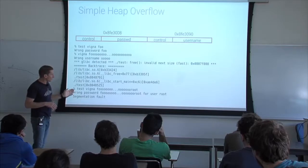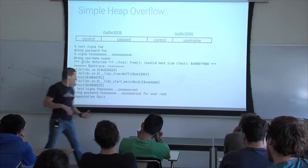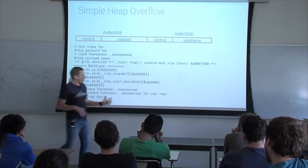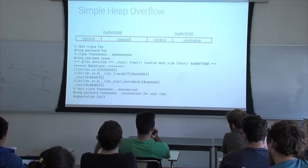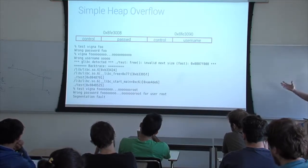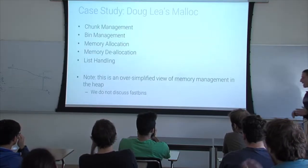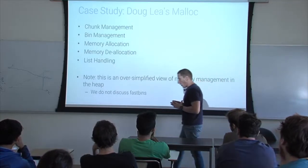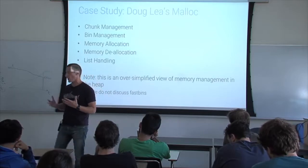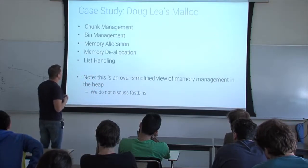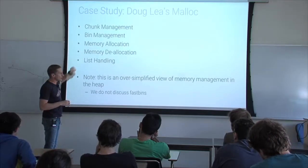If you're careful, you can actually control this value and make sure that there is a password for a root user and so forth. This is an example — it's not a real exploitation, meaning we don't get to execute any code. In order to do that, we have to do a detailed analysis on how these chunks are actually managed. We will see chunk management, bin management, memory allocation, deallocation, and list handling. This is an oversimplified view of the heap — the heap actually has pretty complicated management.